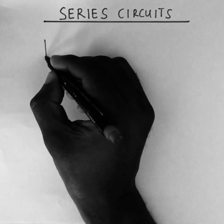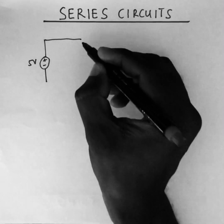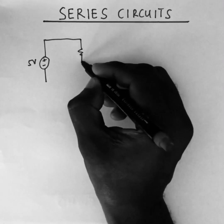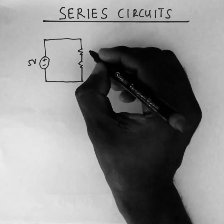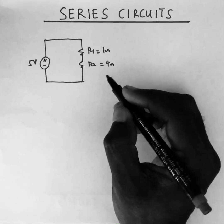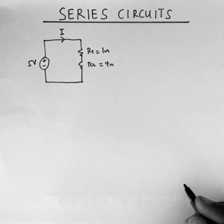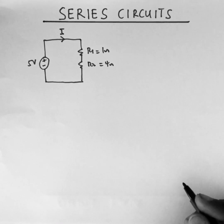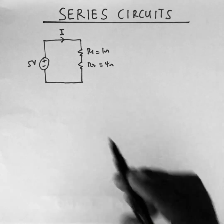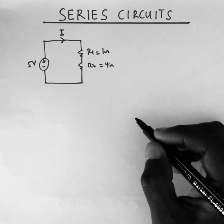Now let's talk about series circuits. Let's consider a circuit with a 5 volt voltage source connected across two series resistors, r1 being 1 ohm and r2 being 4 ohms. The voltage drives current i through the resistors. For resistors connected in series, the same current flows through them.